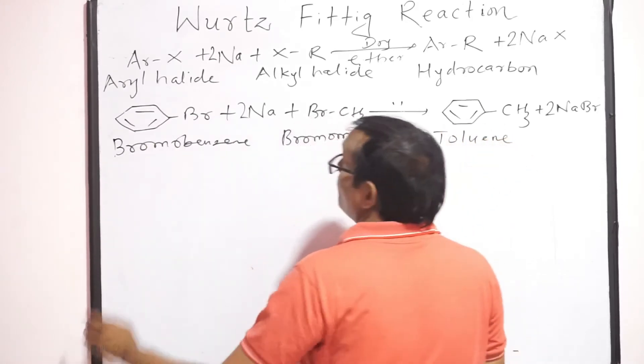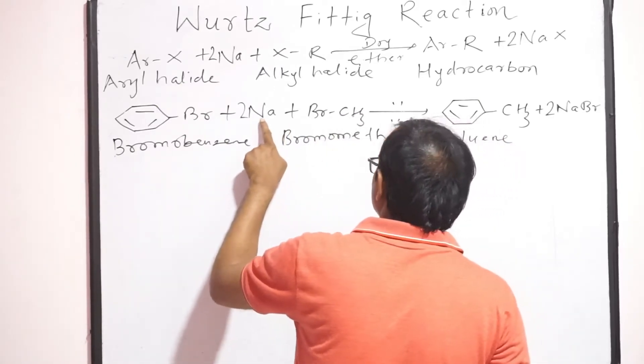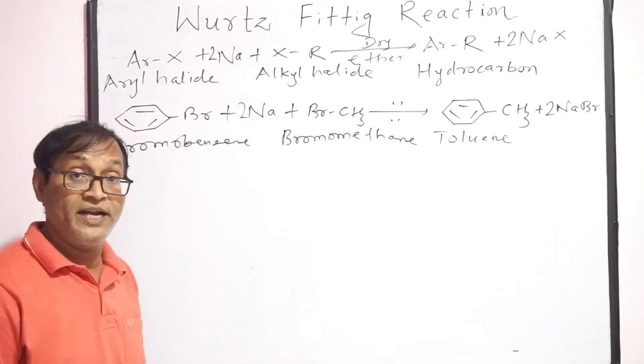Therefore, when bromobenzene and bromomethane are heated with sodium metal in presence of dry ether, toluene is obtained. This is the example of Wurtz Fittig Reaction.